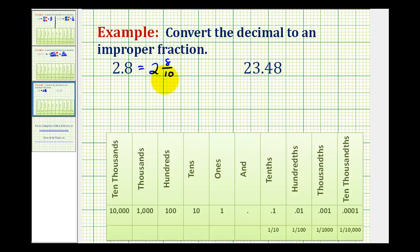And now to convert this to an improper fraction, we would have a denominator of 10. And the numerator would be 10 times 2 plus 8, which would be 28.